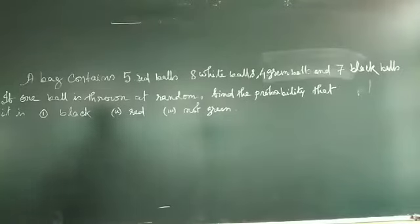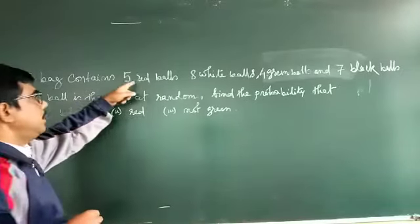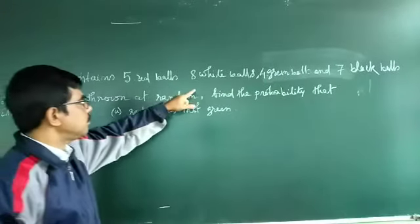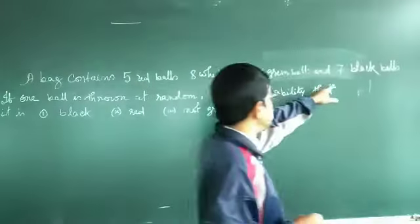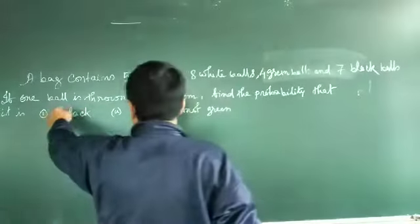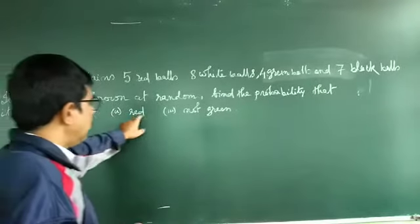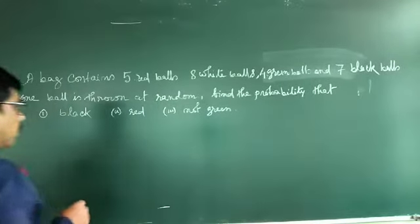We're going to solve a question from probability. A bag contains 5 red balls, 8 white balls, 4 green balls, and 7 black balls. If one ball is drawn at random, find the probability that it is black, red, or not green.